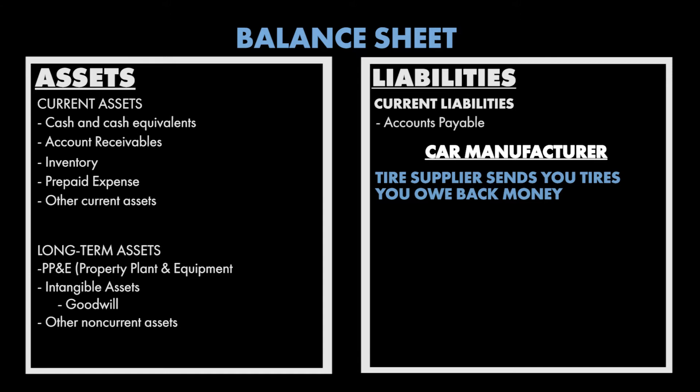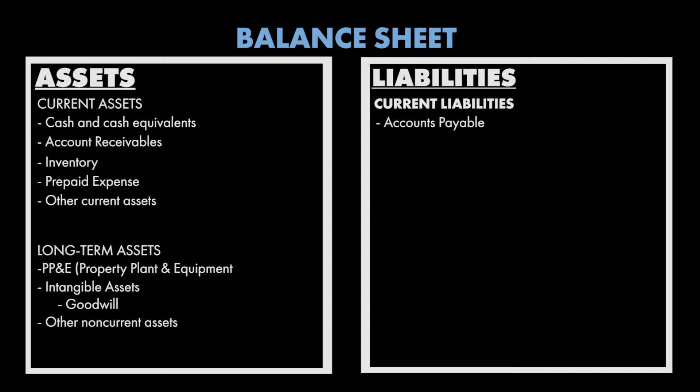Accounts payable is really any bills that you pay to suppliers, electric utilities, things like that — stuff that you pay relatively frequently and often enough to become just a recurring bill. These are always paid within one year and they are always called current liabilities.